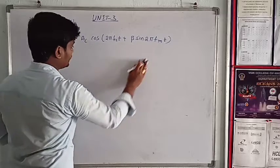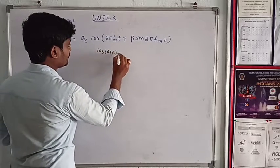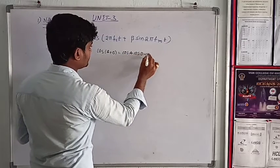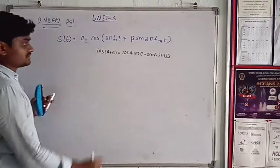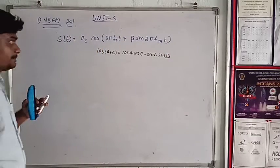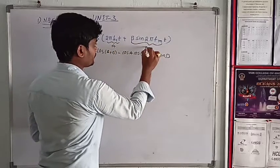This is the cos A plus B formula. Cos A cos B minus sin A sin B. So cos A plus B equals cos A cos B minus sin A sin B.